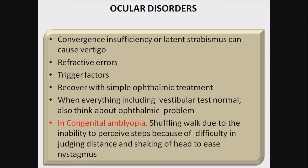Ocular disorders — usually forgotten in routine practice. Convergence insufficiency or latent strabismus can cause vertigo. Refractive errors such as hyperopia, myopia, and astigmatism can cause vertigo. Trigger factors include frequent use of television, mobile phones, or computers in children. Recovery occurs with simple ophthalmic treatments. When everything including vestibular tests is normal, remember ophthalmic problems. In congenital amblyopia, shuffling gait is seen due to inability to judge distance and shaking of head to ease nystagmus.